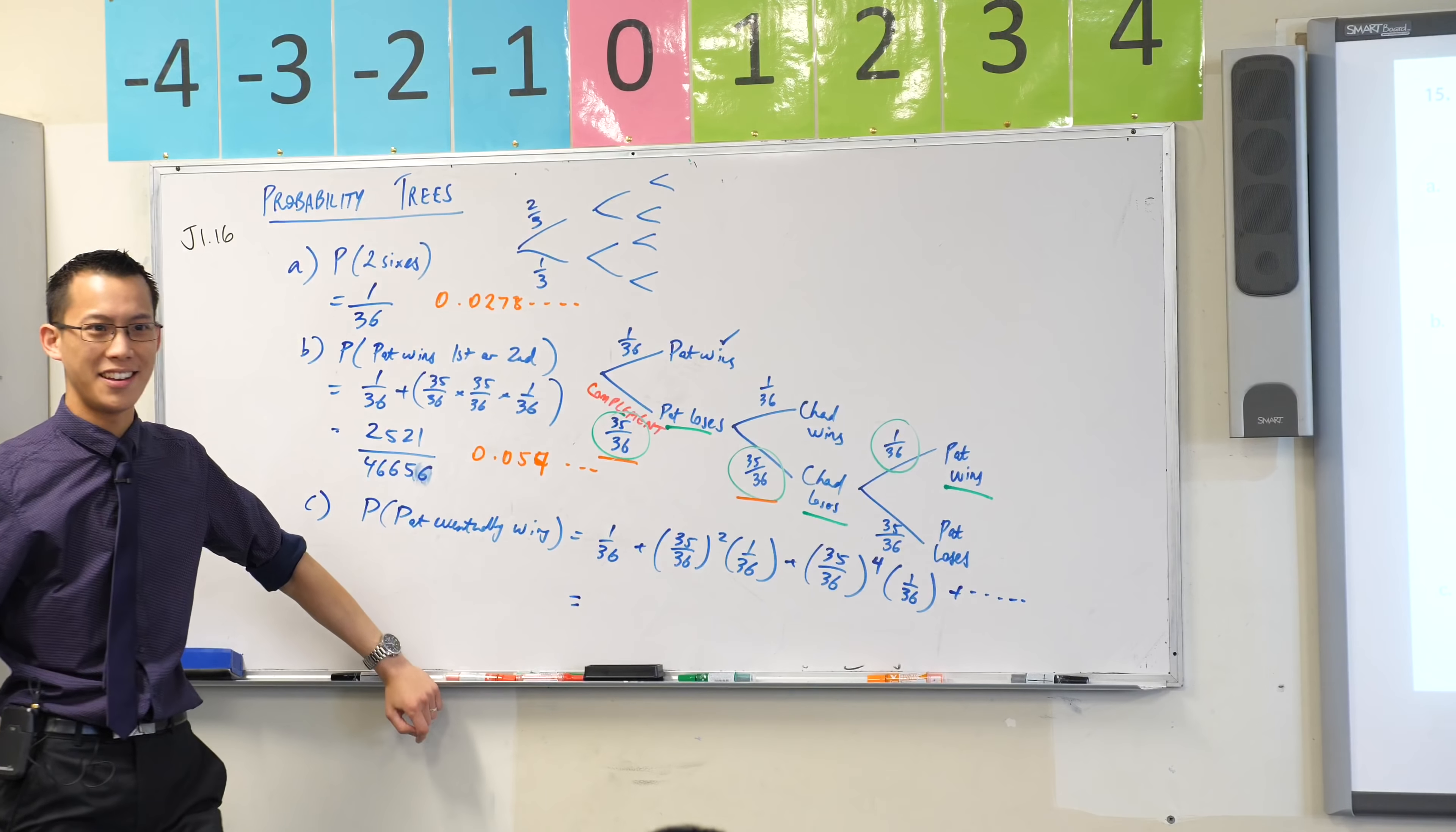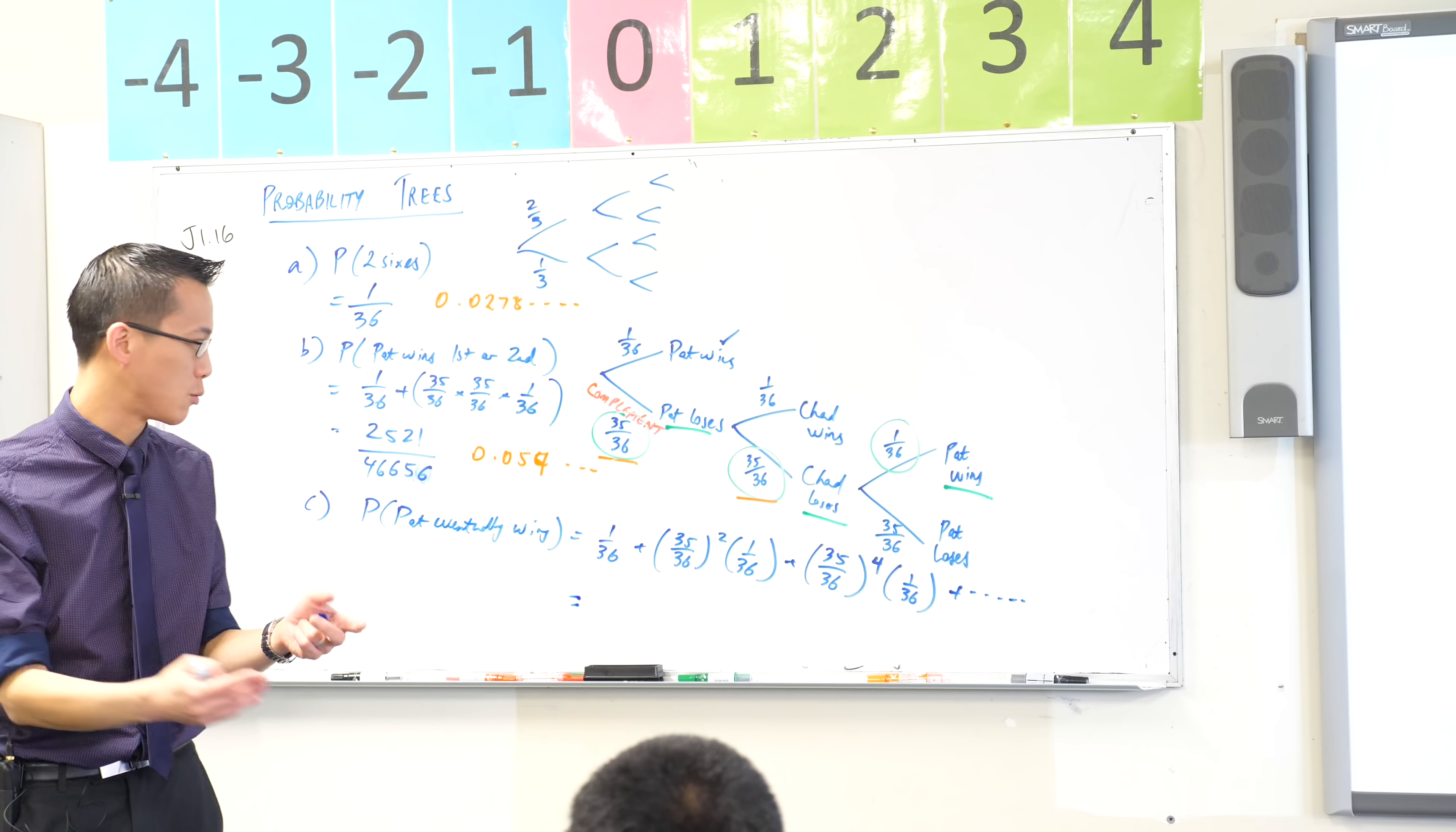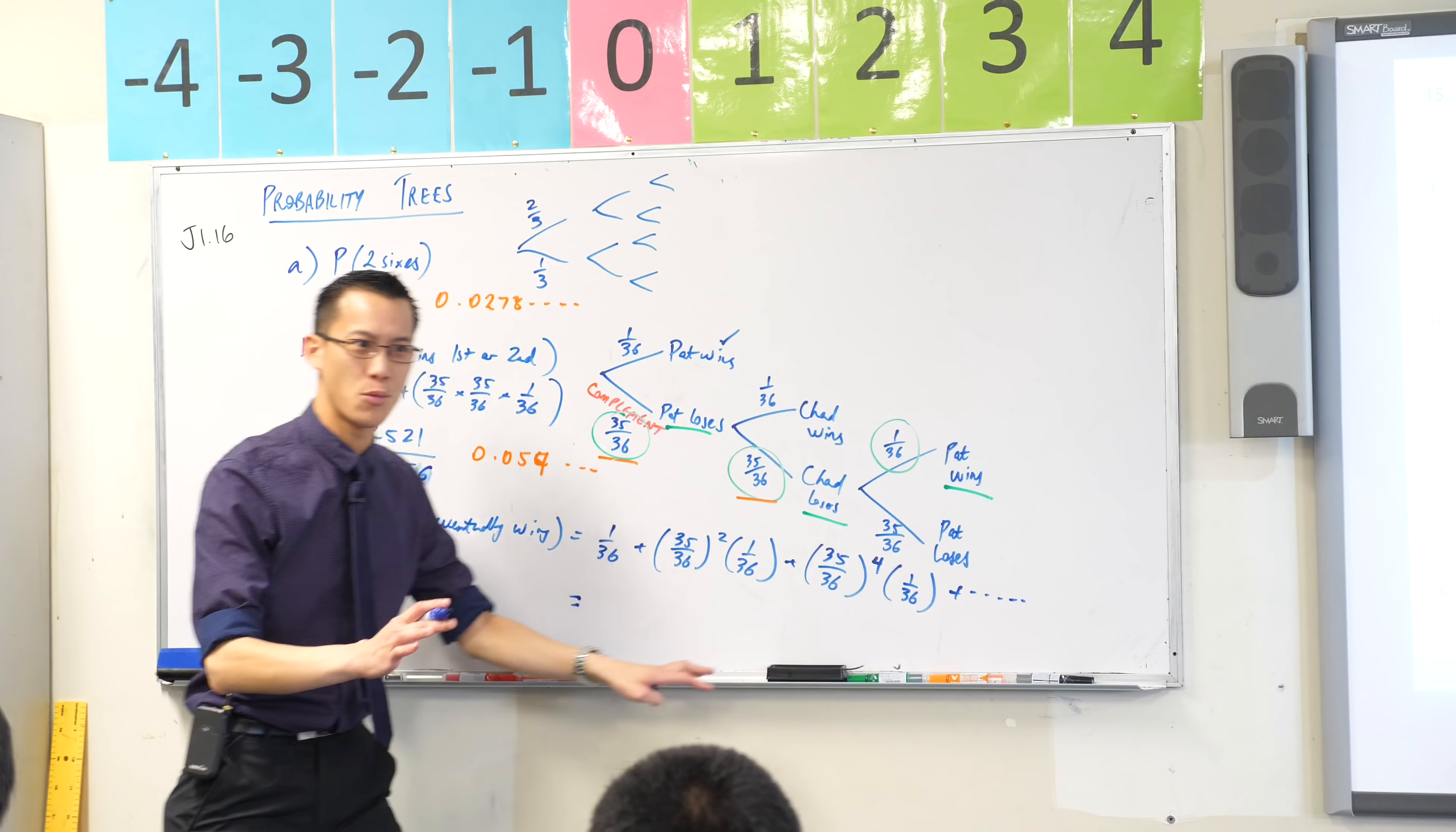But this will keep on going forever. Now, this is a series that gets smaller and each term successively gets smaller and smaller. And it gets small fast enough to have what's it called when this whole thing approaches something. It has a limiting sum, right? What is the formula for a limiting sum? It's a really simple one. Hopefully you remember it.